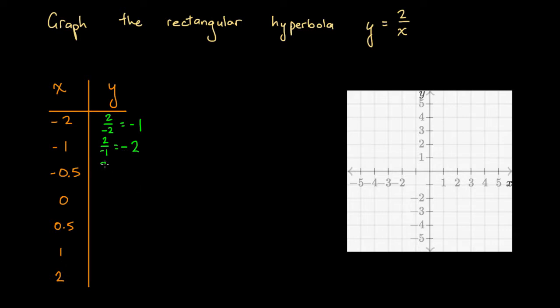What about x equals minus 0.5? So we're going to have 2 over minus 0.5. Well, to figure this out, let's try and get a whole number on the denominator. So we could multiply both the top and the bottom here by 2, because 0.5 times 2 is 1.